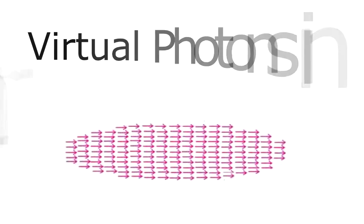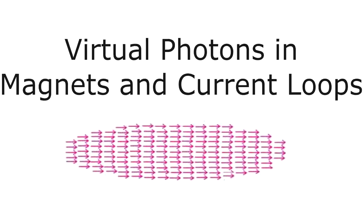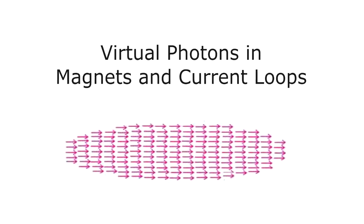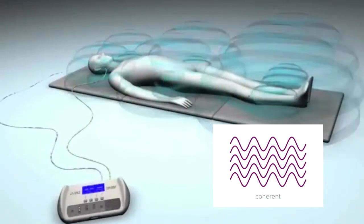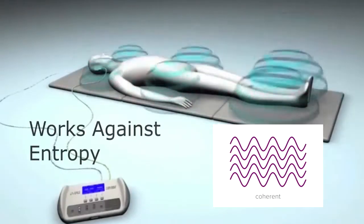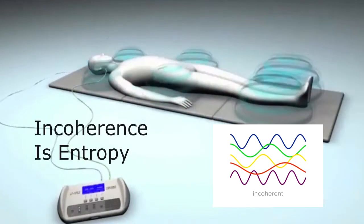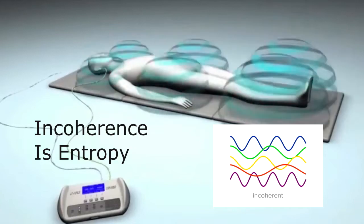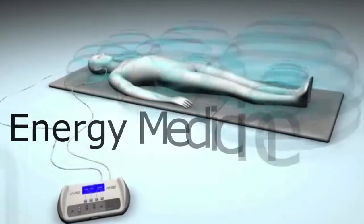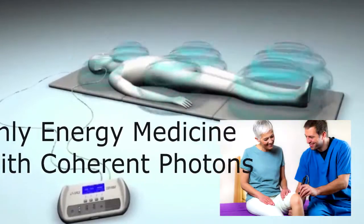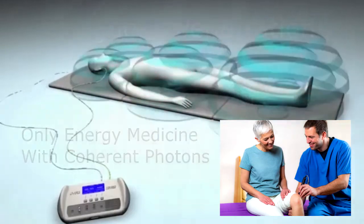So, first, coherence. The virtual photons in magnets and current loops that give rise to magnetic fields and magnetic forces, they're all lined up in the same direction. So, coherent energy is when the energy of the fields is all flowing in the same direction. Coherent energy works against entropy, where incoherent energy or decoherence is entropy. The only two forms of energy medicine that have coherent photons are laser therapy and PEMF.